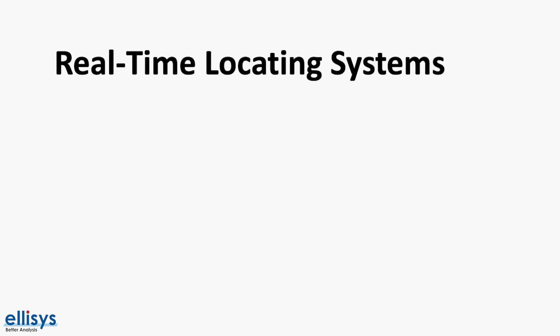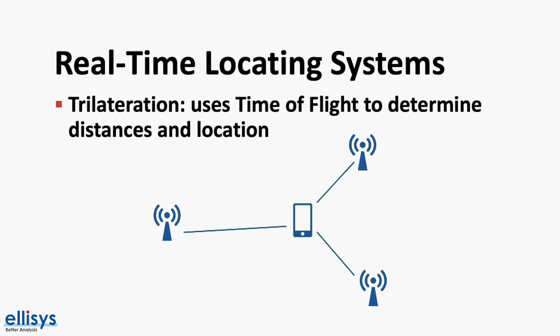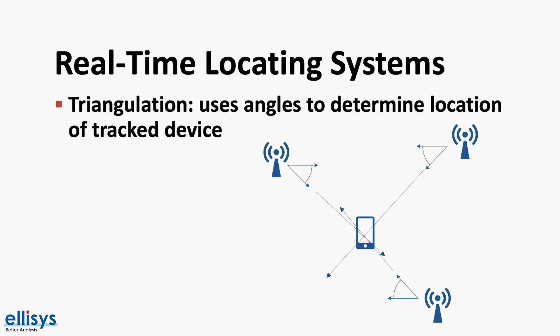Now, in real-time locating systems or RTLS, there are two methods used to determine location. The first is called trilateration. Trilateration uses time of flight to determine distances from at least three transmitters at known locations to the tracked device. These calculated distances are then translated into location coordinates for the tracked device. The second method is triangulation, which uses angles of signals sent or received by devices in fixed locations to determine the location of the device being tracked. Keep in mind that both methods could also be combined to increase location accuracy.